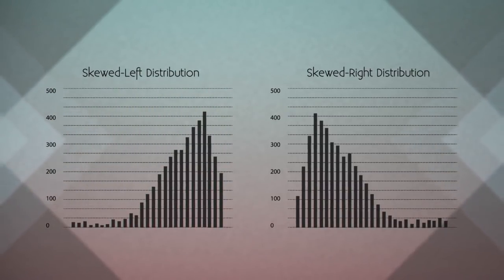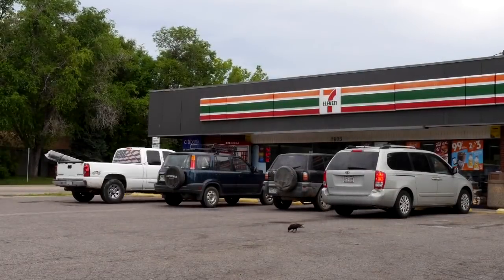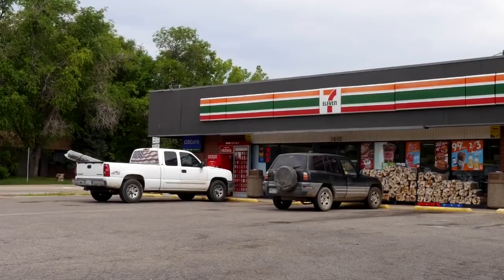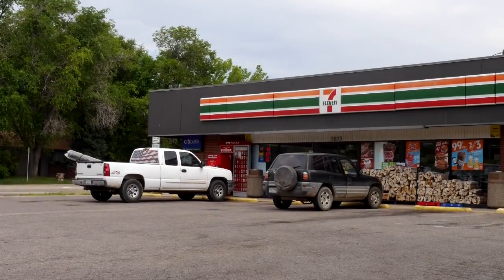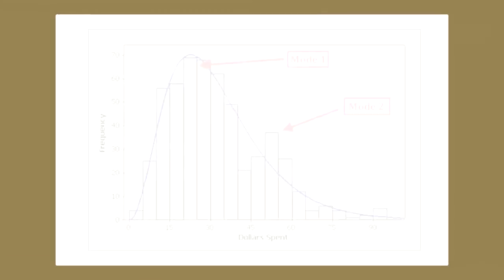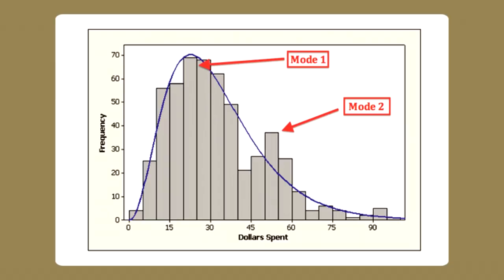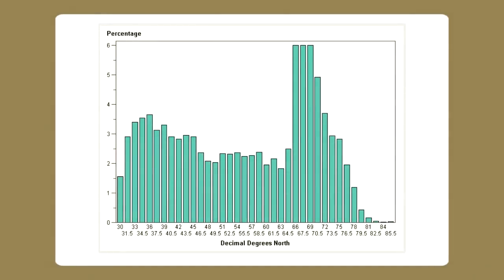Skewed distributions can also be bimodal. For example, a medium-sized 24-hour convenience store collected data from 537 customers on the amount spent in a single visit. The histogram shows spending concentrated around $20 and again around $50. Similarly, from the Mars crater data set, the latitude of Mars crater rims is concentrated around 66–69 decimal degrees north, and again around 36 decimal degrees north. The mode or modes of a variable are the values that occur most often, and knowing this can help you make better decisions.